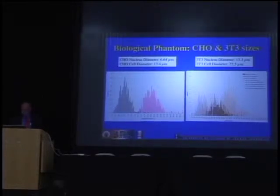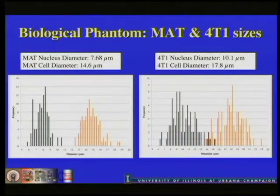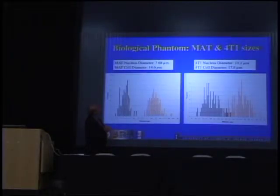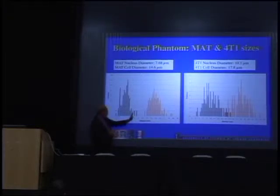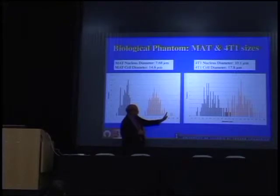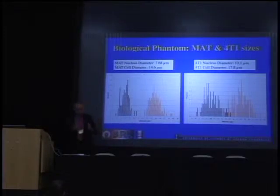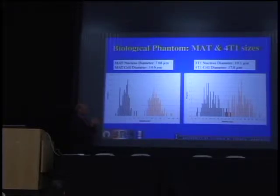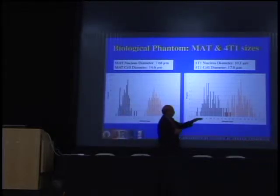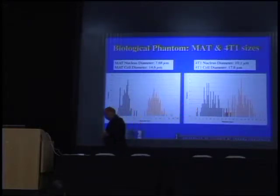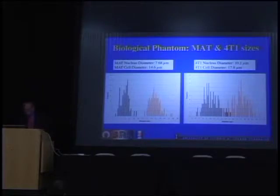We also measured sizes for MAT and 4T1 tumors. For the MAT tumor, diameters range roughly from 6 to 17 microns; for 4T1, from about 7 to 21 microns. The key observation is that MAT cells cluster tightly in size — a relatively narrow distribution — whereas 4T1 has a much wider standard deviation. I'll come back to that in a moment.